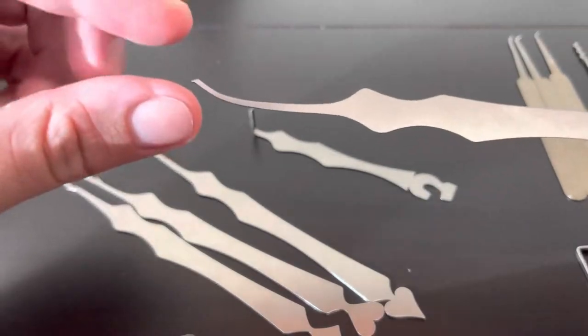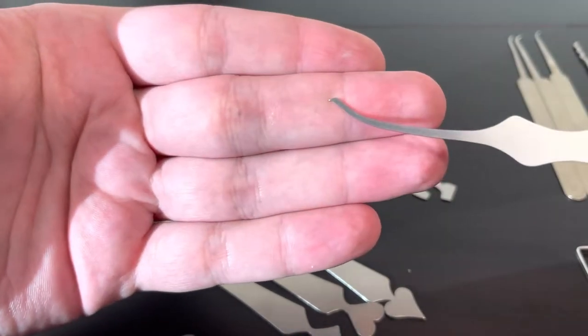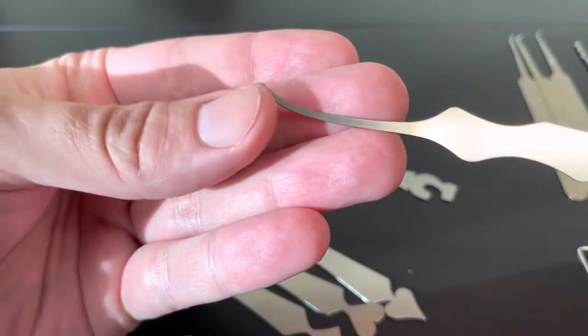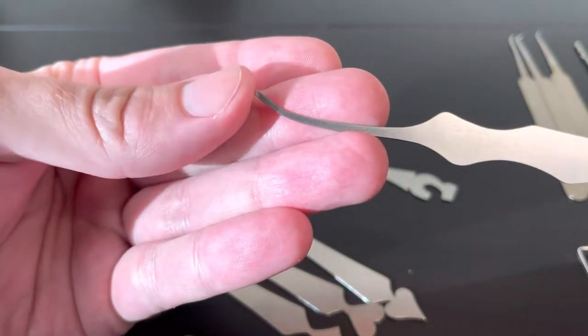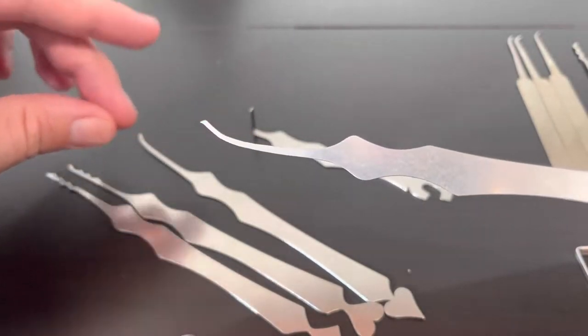So you see there's going to be for the hooks two different types of tips. This one has a little bit of a lip there on that end and a very nice sweep up to the top.